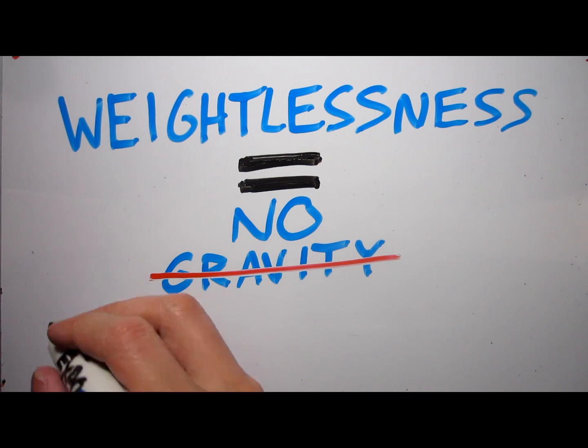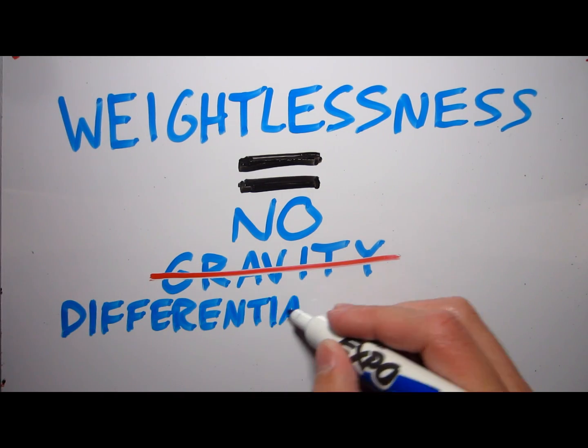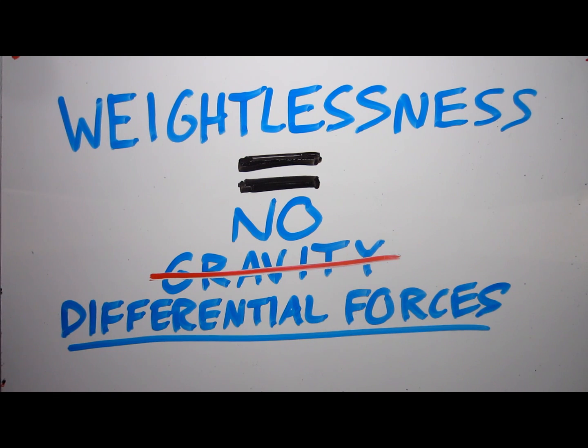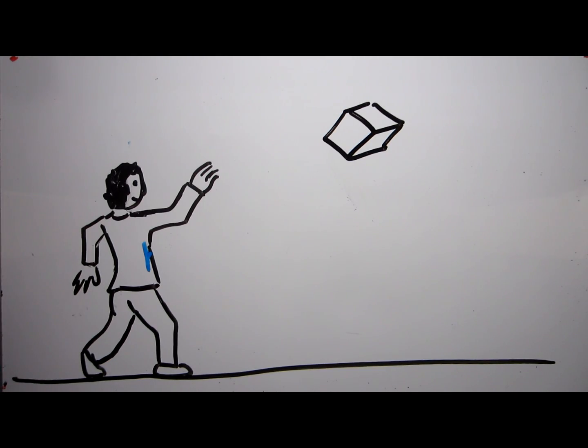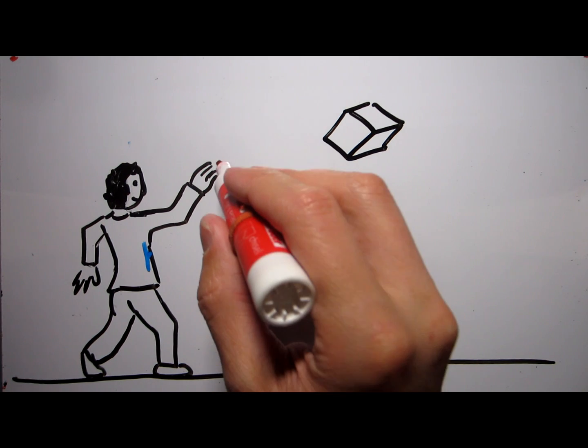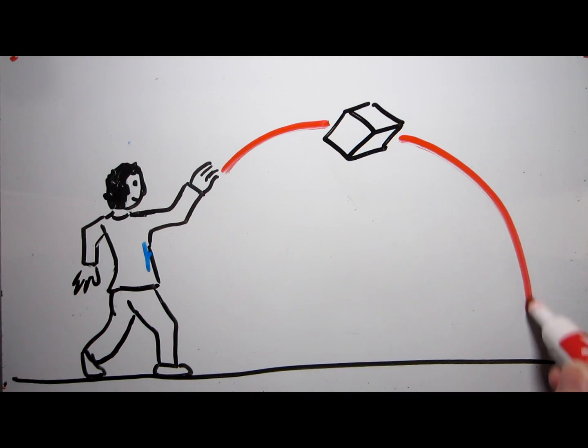So you don't need to escape gravity in order to feel weightless. You just need to avoid force differentials. Any time an object is in free fall, it experiences weightlessness. If you throw something, it'll be weightless from the moment it leaves your hand to the moment it hits the ground. Besides the air rushing by, the object will experience effectively the same conditions as it would in orbit above the atmosphere.